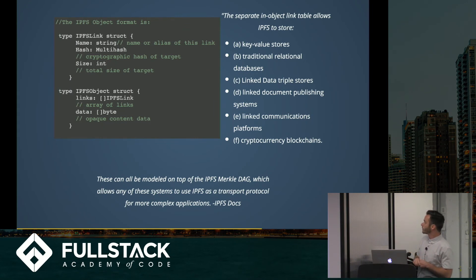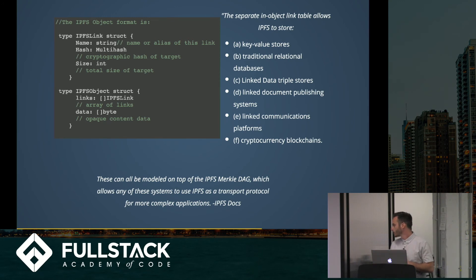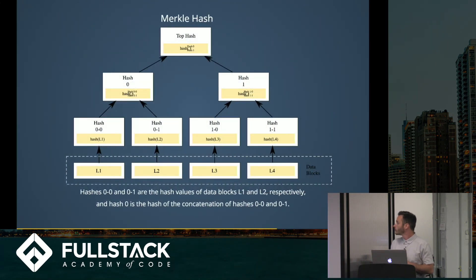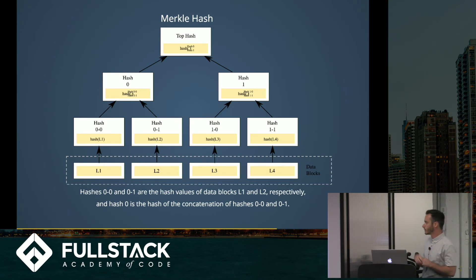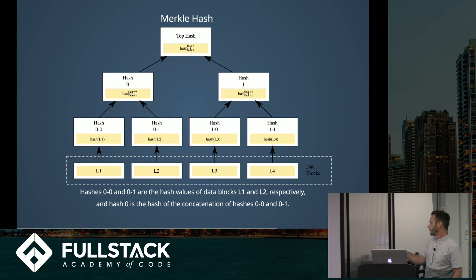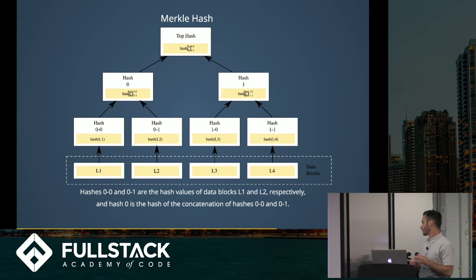Here's a Merkle hash table — anyone using Git is essentially using this structure, where data blocks are the actual data in memory. Hashes 0-0 and 0-1 are the hash values of data blocks L1 and L2, and hash 0 is the concatenation of hashes 0-0 and 0-1.